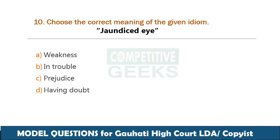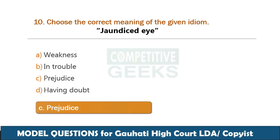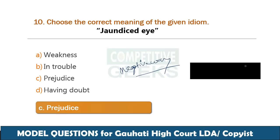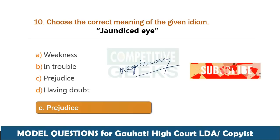Next idiom: jaundiced. The correct answer is prejudice — it carries a negative meaning. If you are not sure about a topic, it reflects a jaundiced or prejudiced view of the subject.